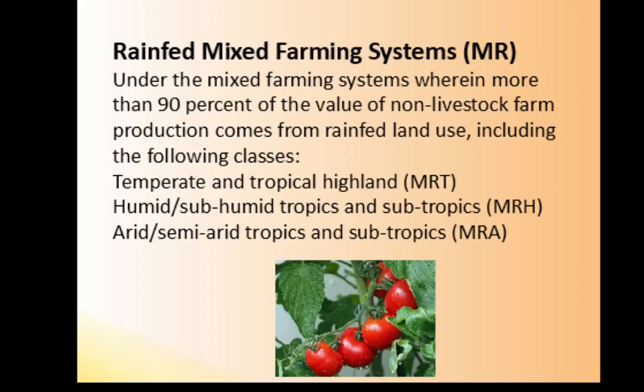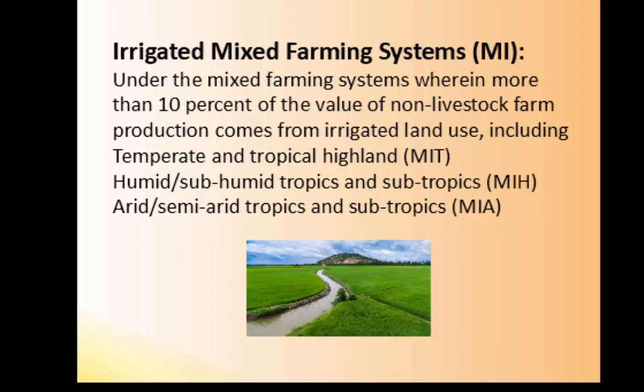Under the mixed farming systems, the rain-fed subclass has 90 percent of the value of non-livestock farm production coming from rain-fed land use, including: temperate and tropical highland (MRT), humid and subhumid tropics and subtropics (MRH), and arid and semi-arid tropics and subtropics (MRA). The irrigated mixed farming subclass is where more than 10 percent of the value of non-livestock farm production comes from irrigated land use, including: temperate and tropical highland (MIT), humid and subhumid tropics and subtropics (MIH), and arid and semi-arid tropics and subtropics (MIA).